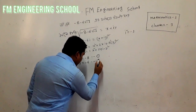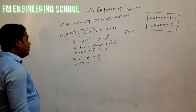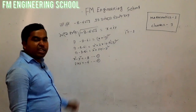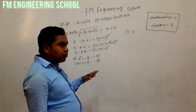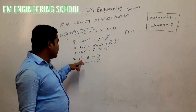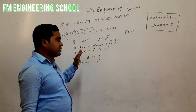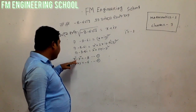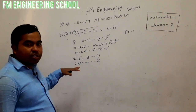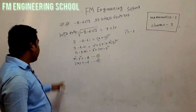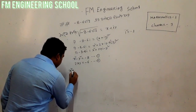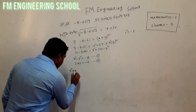We have two equations. From the imaginary part: 2xy equals minus 6. We also have x squared minus y squared equals minus 8. We will use these two equations to find x squared plus y squared.